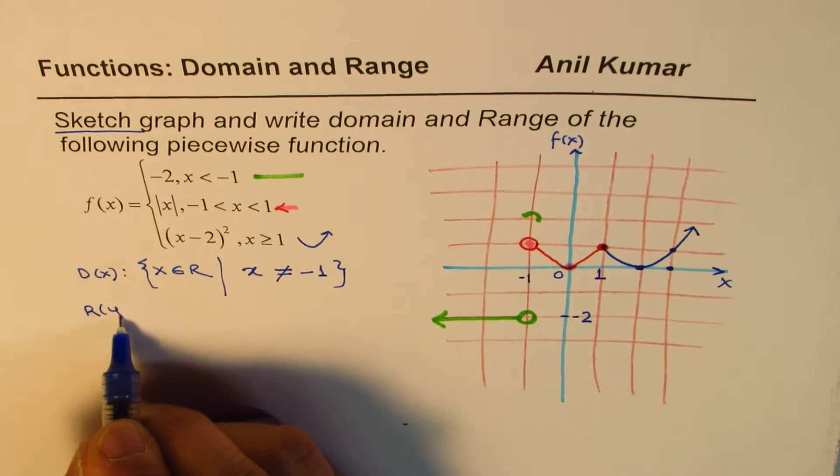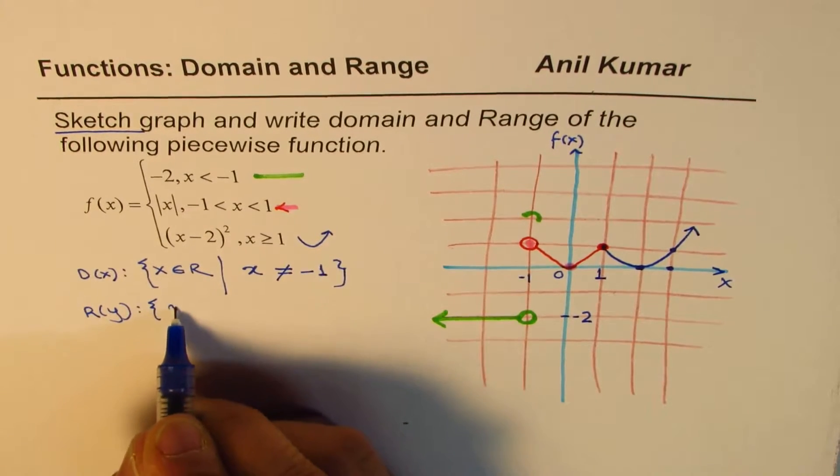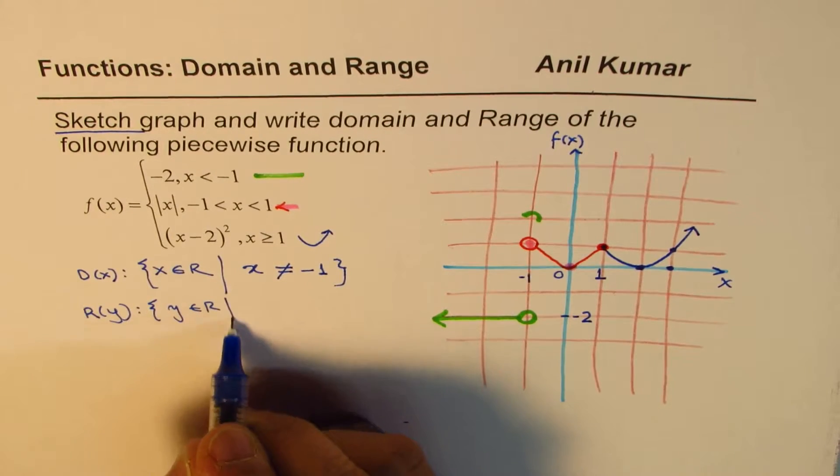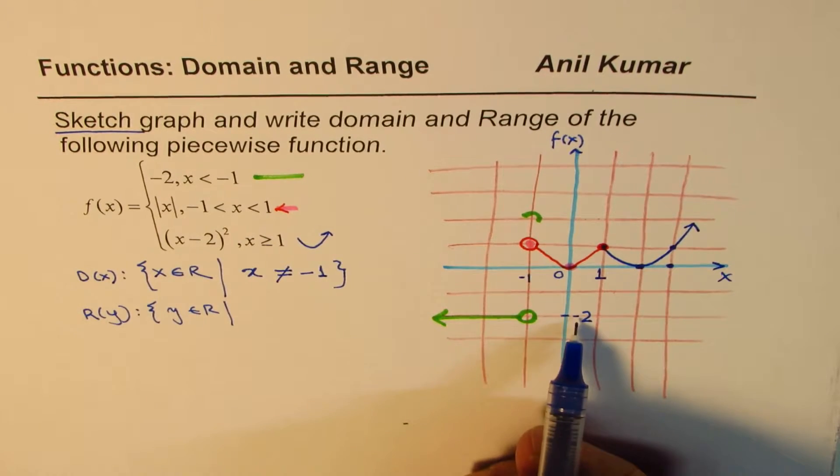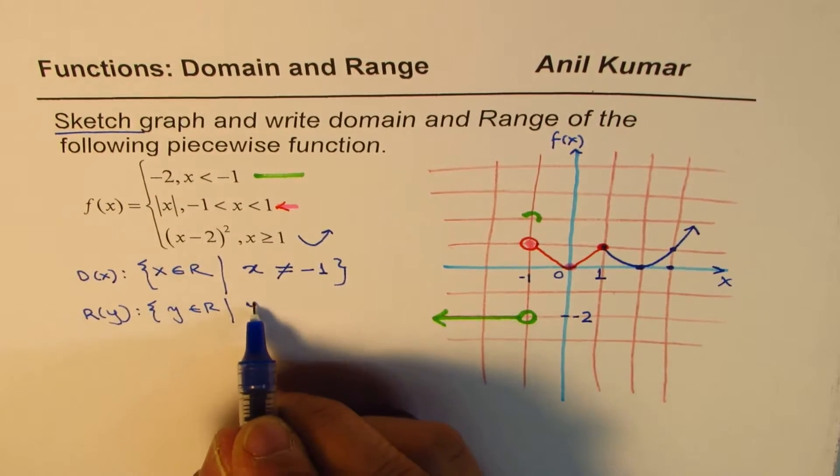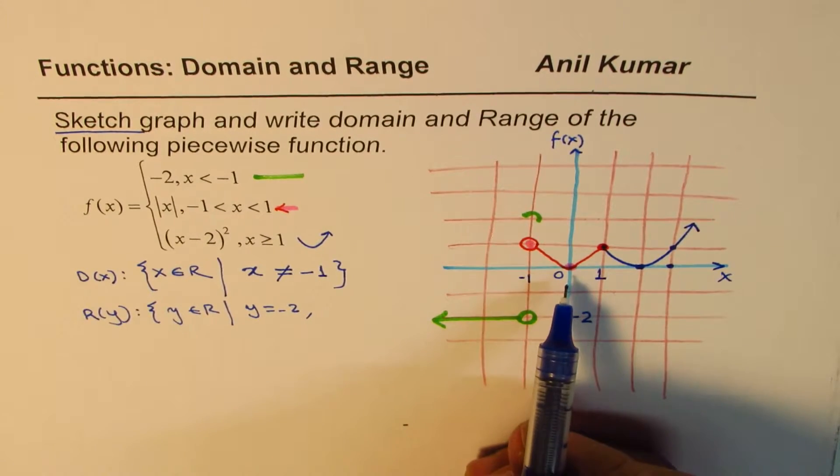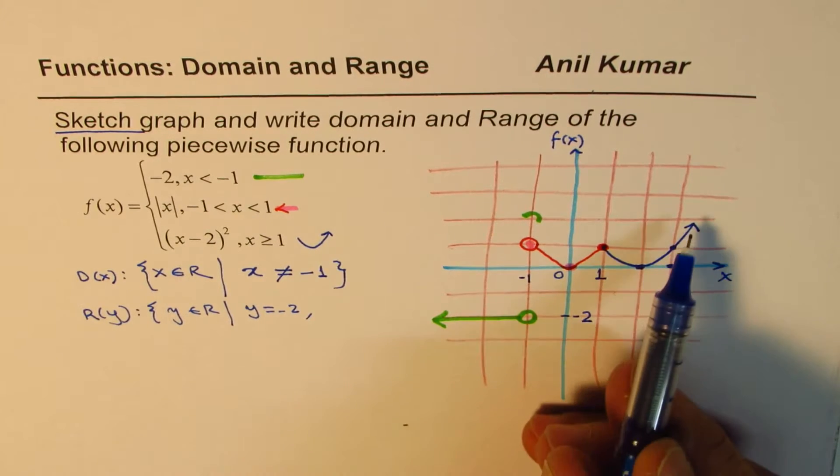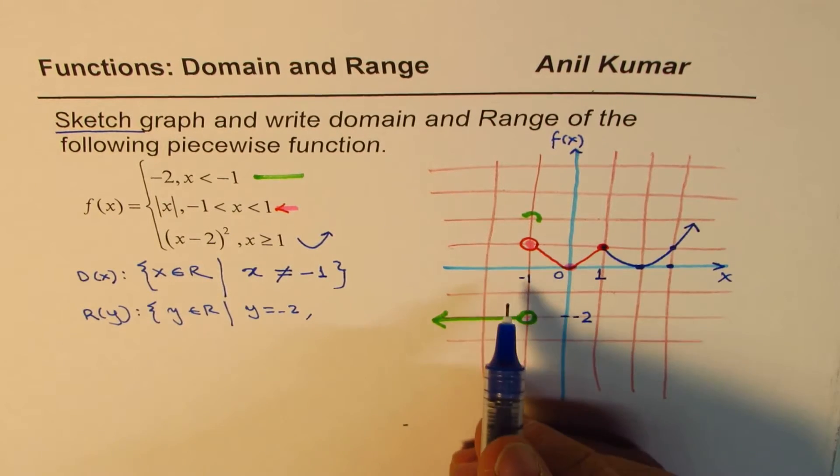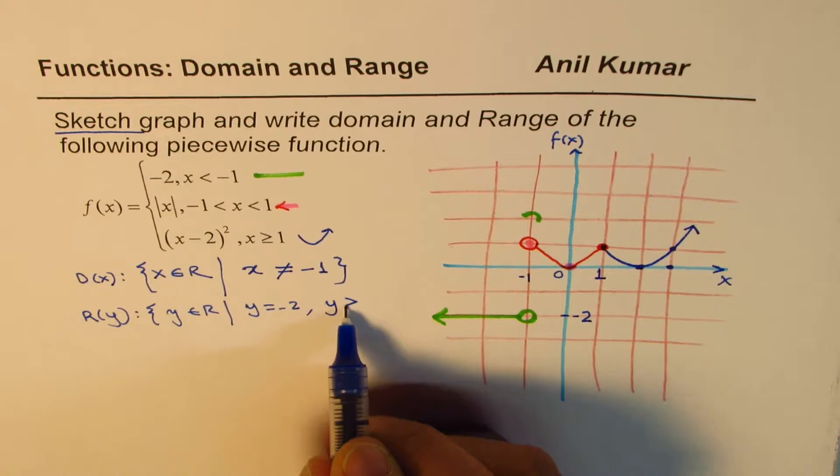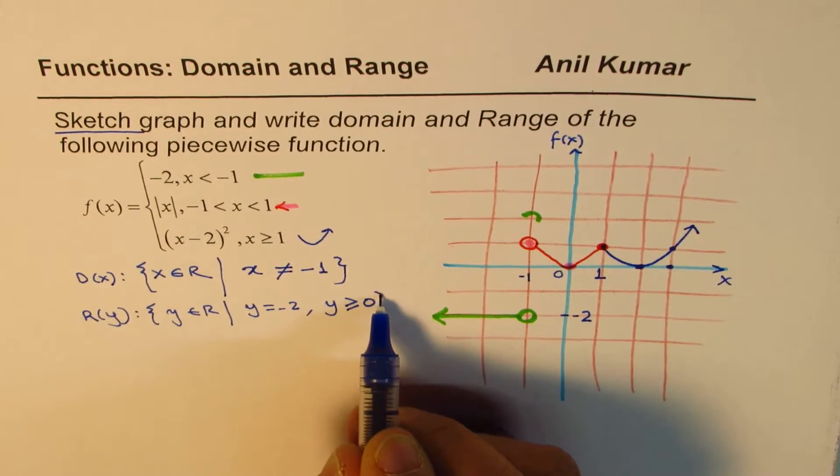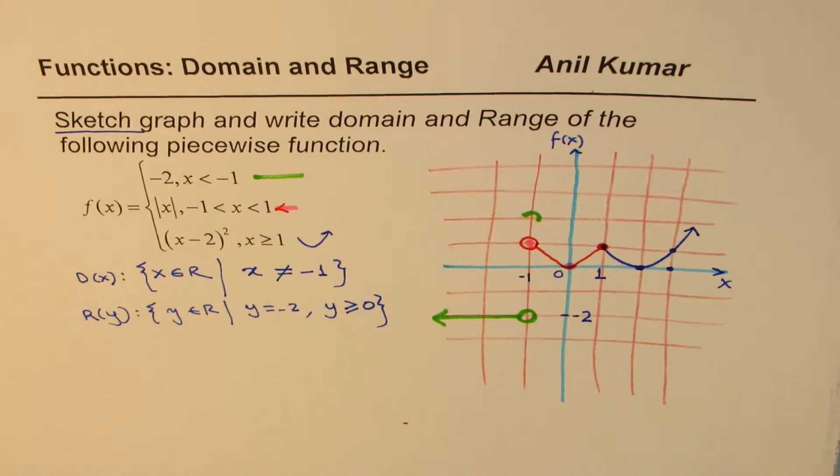How about range? Range of this function is y belongs to real numbers. So it has one value, which is minus 2. So let's say y equals to minus 2. And it has all the values from 0 to infinity, positive. And you can say y is greater than or equal to 0. So that covers the range part of this function. So that is how we could answer this particular question.